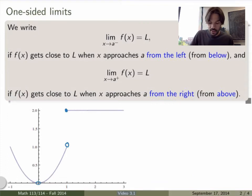So we write limit as x approaches a minus, meaning x approaches a from the left of f(x) equals L, if this is the behavior of the function when you approach a from the left, or from below the value of a. And x of a plus here means that you're approaching from the right.